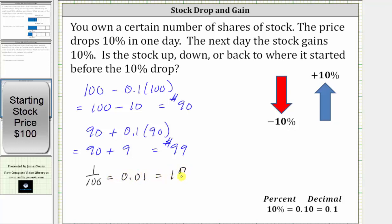which is equal to 1%. So now we know if a stock price drops 10% and then gains 10%, the stock price, regardless of the starting price, will still be down 1%.